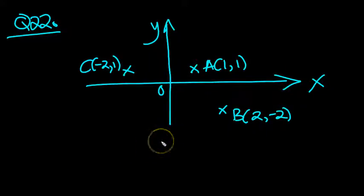Okay then guys, let's have a look at this problem then. Here's our coordinates. We've got A is (1,1), B is (2,-2), and C is (-2,1).